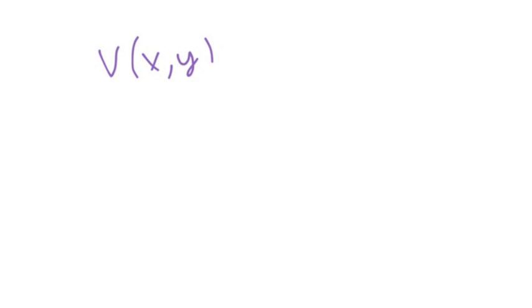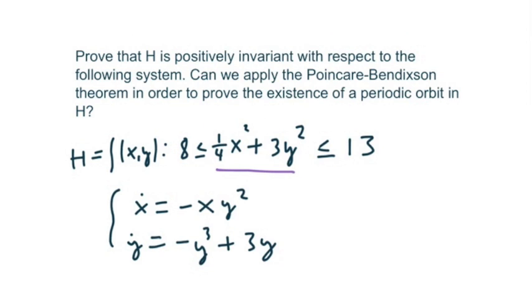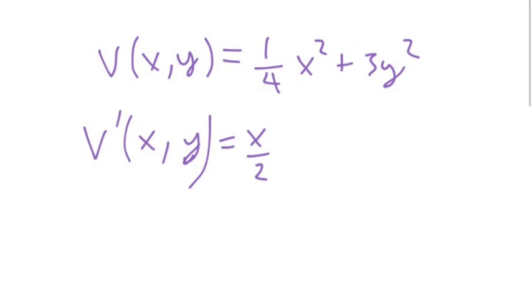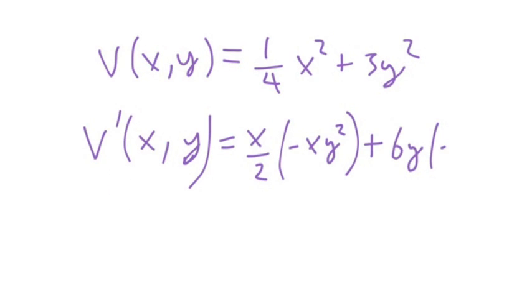And we'll say, how about V of xy equals one fourth x squared plus 3y squared. So to take this, you just do the partial derivative with respect to x. So that's just going to be x over 2 times dx/dt, which is like x dot here, minus xy squared. So put that there, minus xy squared. And plus the partial derivative with respect to y, which is just 6y, times dy/dt, which is minus y cubed plus 3y.